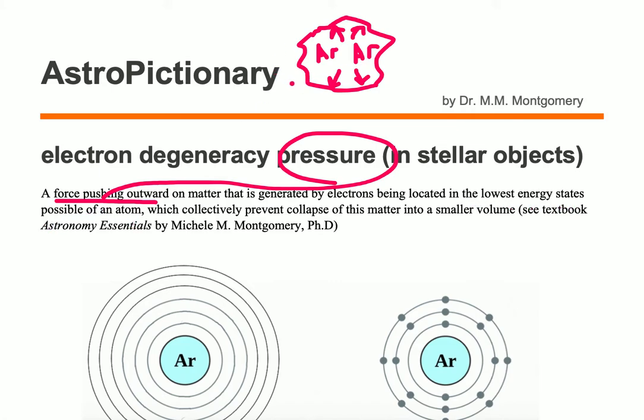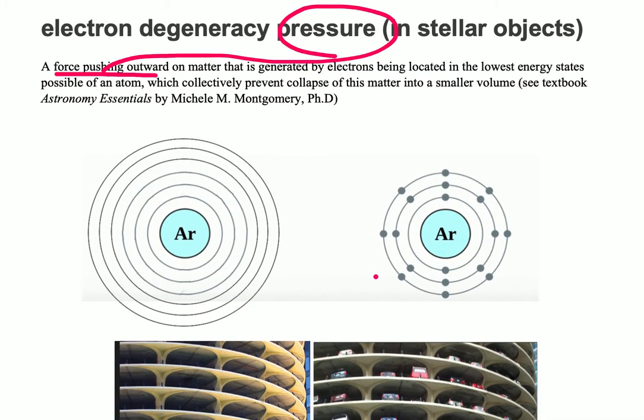Remember, matter is made of atoms. Let's take a look at an example of an argon atom. If we just had a regular gas, like on our left, then our electrons can be located in any levels surrounding the nucleus, which is in blue.